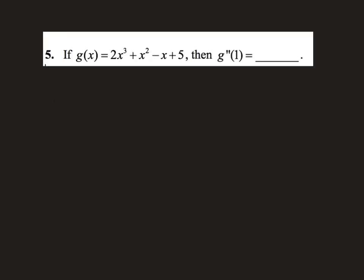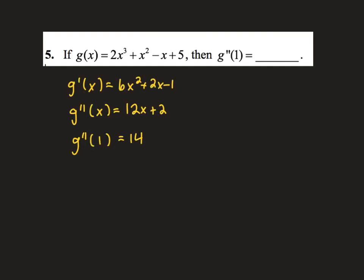Our next question asks us to find g double prime of 1, which means to take two derivatives of g and then plug in 1. Make sure you show all your steps along the way. Show g prime of x, then g double prime of x using another power rule, and then finally g double prime of 1 by plugging 1 in. It's not all about the bottom line answer — it's about the work you show and your notation and labeling.